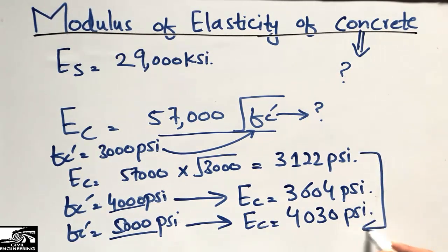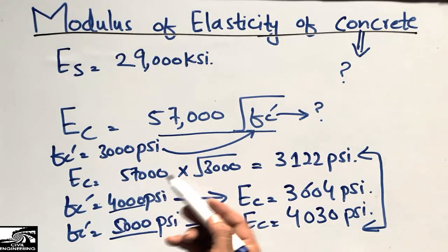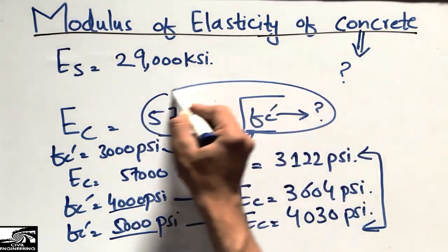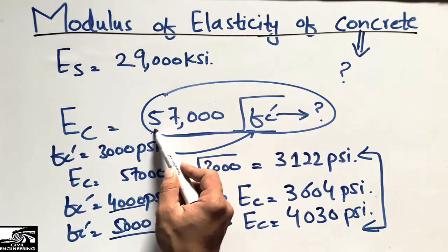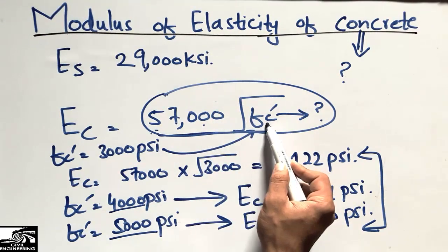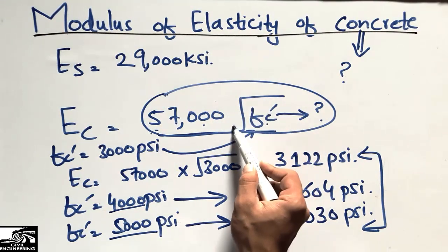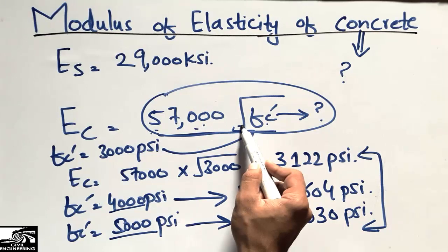It depends on this equation where this is a constant, 57,000, and this is the grade of concrete under the root. So multiplying these two values, we get the elasticity of concrete for different grades of concrete.